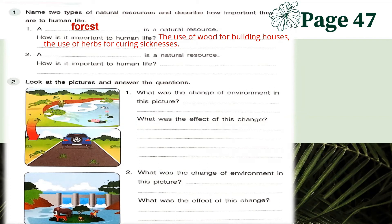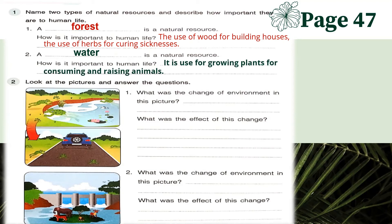Can you think of another natural resource aside from forest? We also have water. Water is a natural resource. As discussed earlier, water is used for growing plants, for drinking, and for raising animals. You can see that on the previous slide.